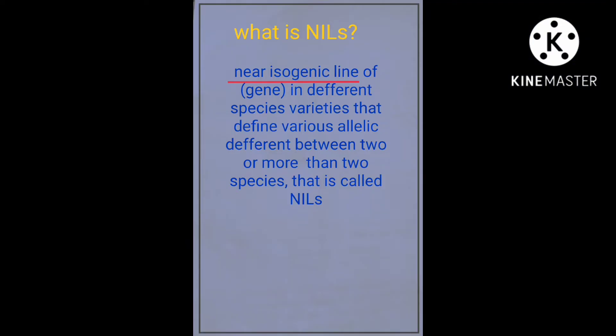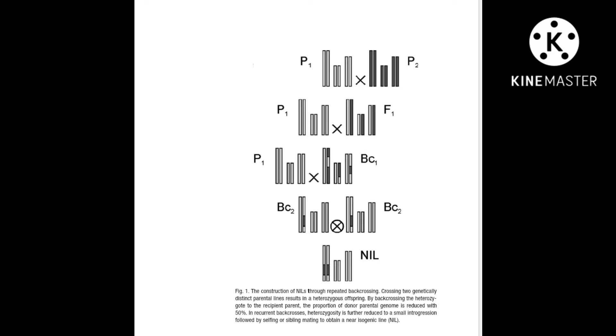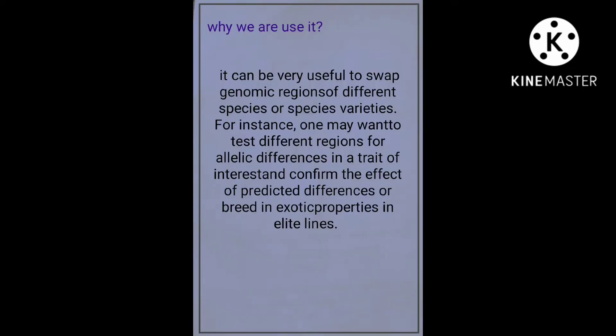Welcome to bioanalysis. Today our topic is SNILS. SNILS is a near isogenic line — that is, a near allelic line that compares a point of the nearest allele. One species is how much different from another species, and that we can calculate from the SNILS.